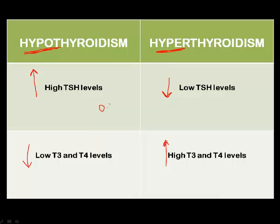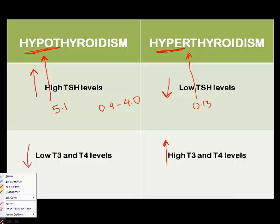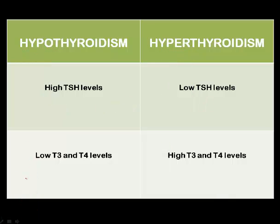It is very easy to remember the TSH level — it is 0.4 to 4.0. So, whenever the TSH value is low, say your value is 0.13, you have a low TSH, so it has to be hyper. And when you have a high value of, say, 5.1 — it's more than the upper limit — so naturally, you have to be hypo. So if you understand this relation, 60 to 70 percent, or sometimes even more, you can always arrive at the right diagnosis in each and every file.